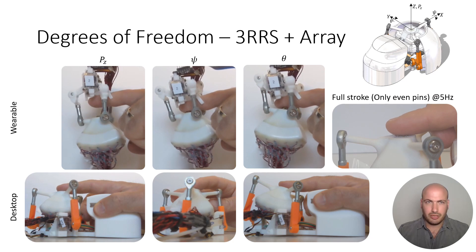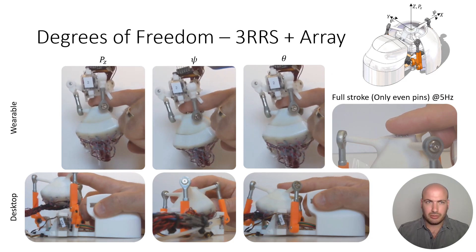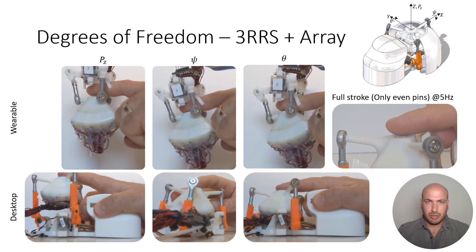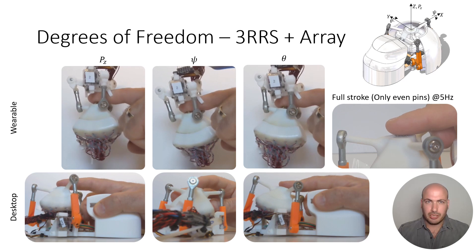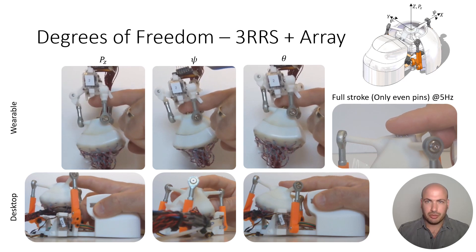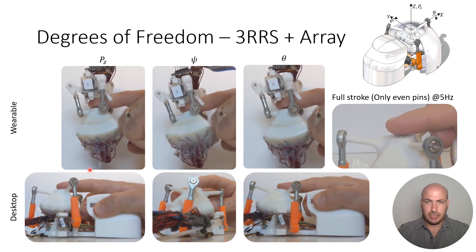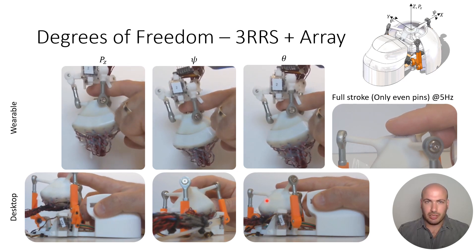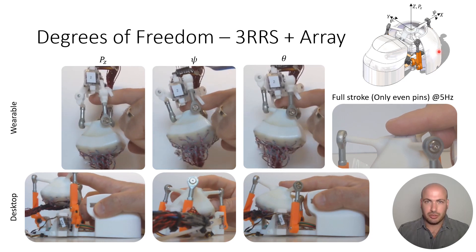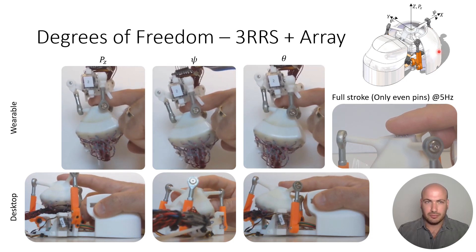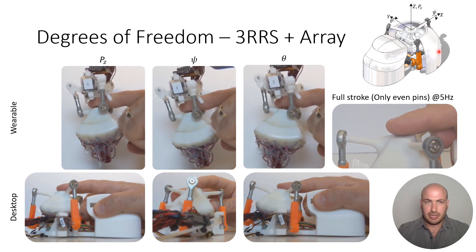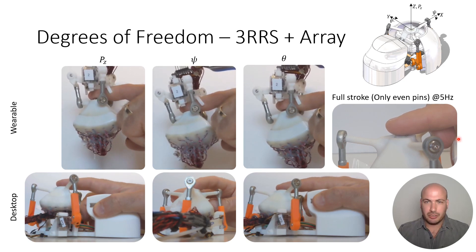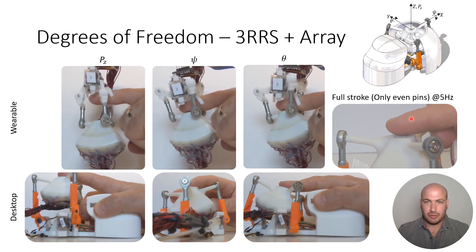Hugo is divided into two main subsystems: a 3RRS parallel manipulator which has 3 degrees of freedom — translation along the z-axis and rotation around the x- and y-axis, as shown in the six figures on the left — and a 5x5 high-frequency pin array, as shown in the right figure.